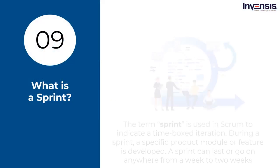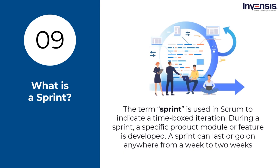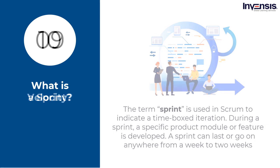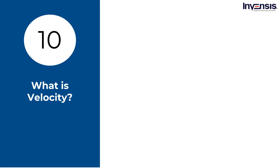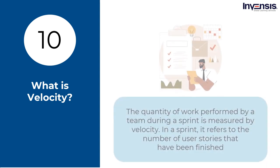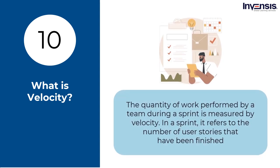What is a sprint? The term sprint is used in Scrum to indicate a time-specific iteration. During a sprint, a specific product module or feature is developed. A sprint can last anywhere from a week to two weeks. What is velocity? The quantity of work performed by a team during a sprint is measured by velocity — it refers to the number of user stories that have been finished in a sprint.